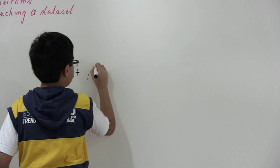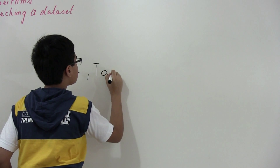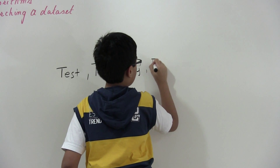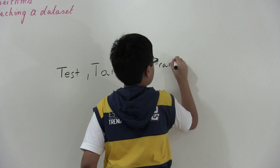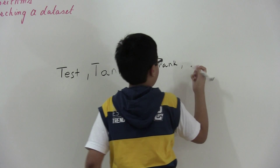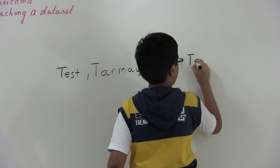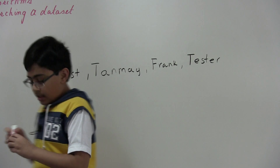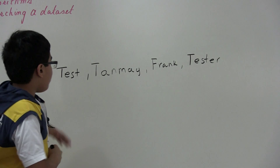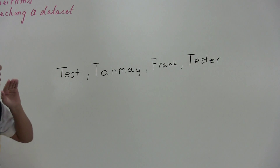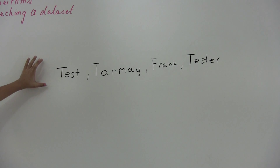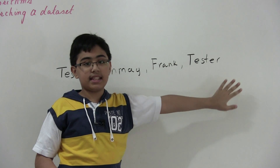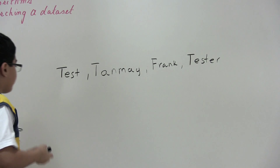I'm also doing keyword matching, but with a catch: I'm using a Levinstein string distance algorithm from rosettacode.org in order to rank the final results and give them to you in order of relevance. So let's say you have a dataset like: test, ten, me, Frank, and tester. This will show you how it works. Now let's say you want to search for everything in this dataset that has the word 'test' in it.